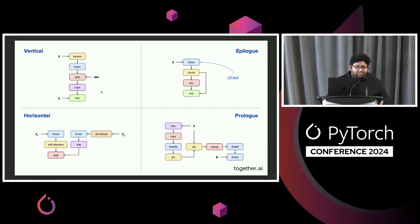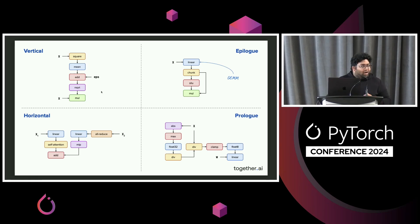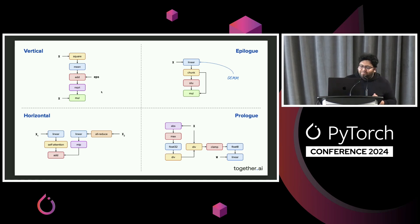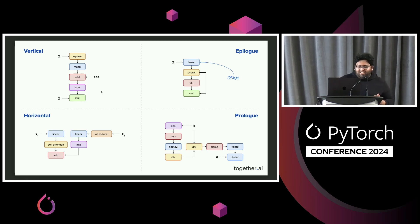TorchCompile really excels with the top half — vertical and epilog fusion. With the bottom half — horizontal and prolog fusion — it's a work in progress. But that's a gap that we try to fill in and do really well.